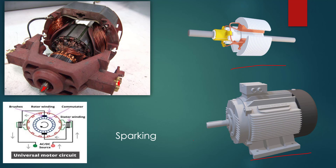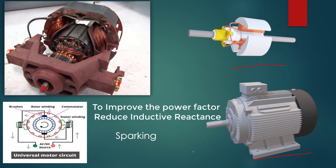Sparking at the brushes is another issue when running the universal motor on an AC signal, occurring during starting and running. Because people wanted to use this motor for both AC and DC, some fine-tuning was done to minimize those drawbacks for smoother AC operation. This includes laminating the field structures to minimize losses due to the armature spinning inside the magnetic field.